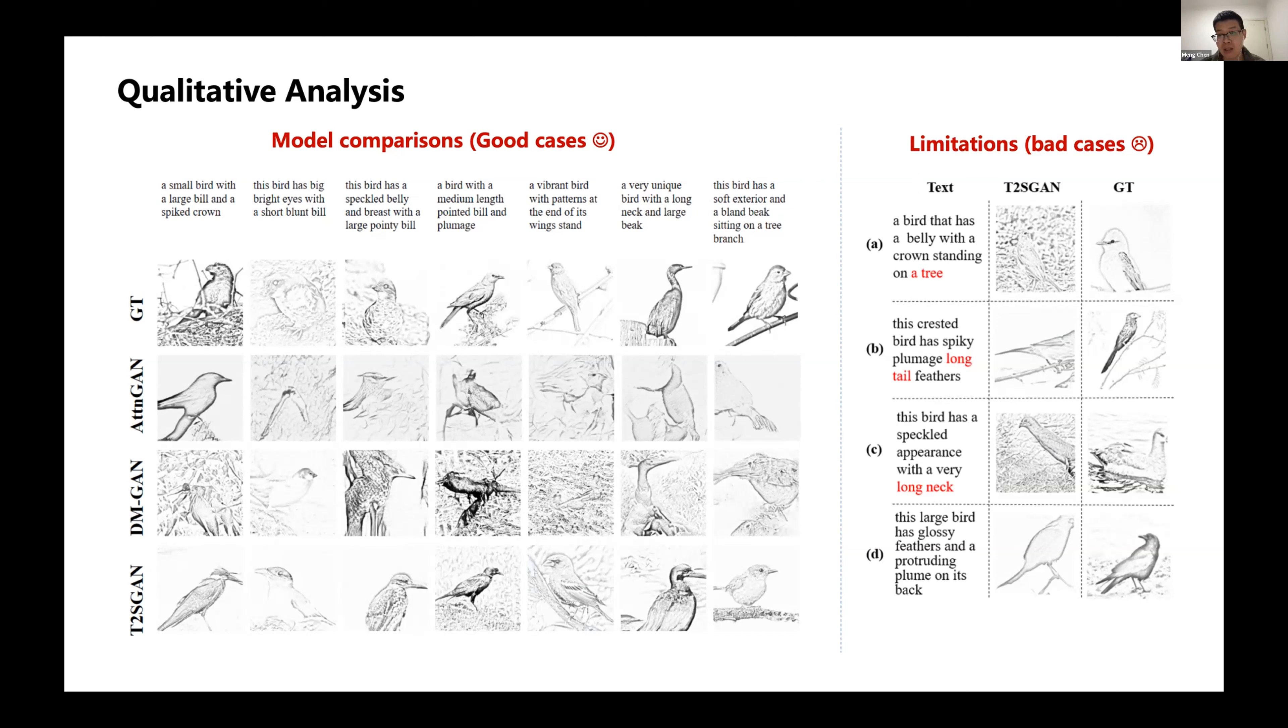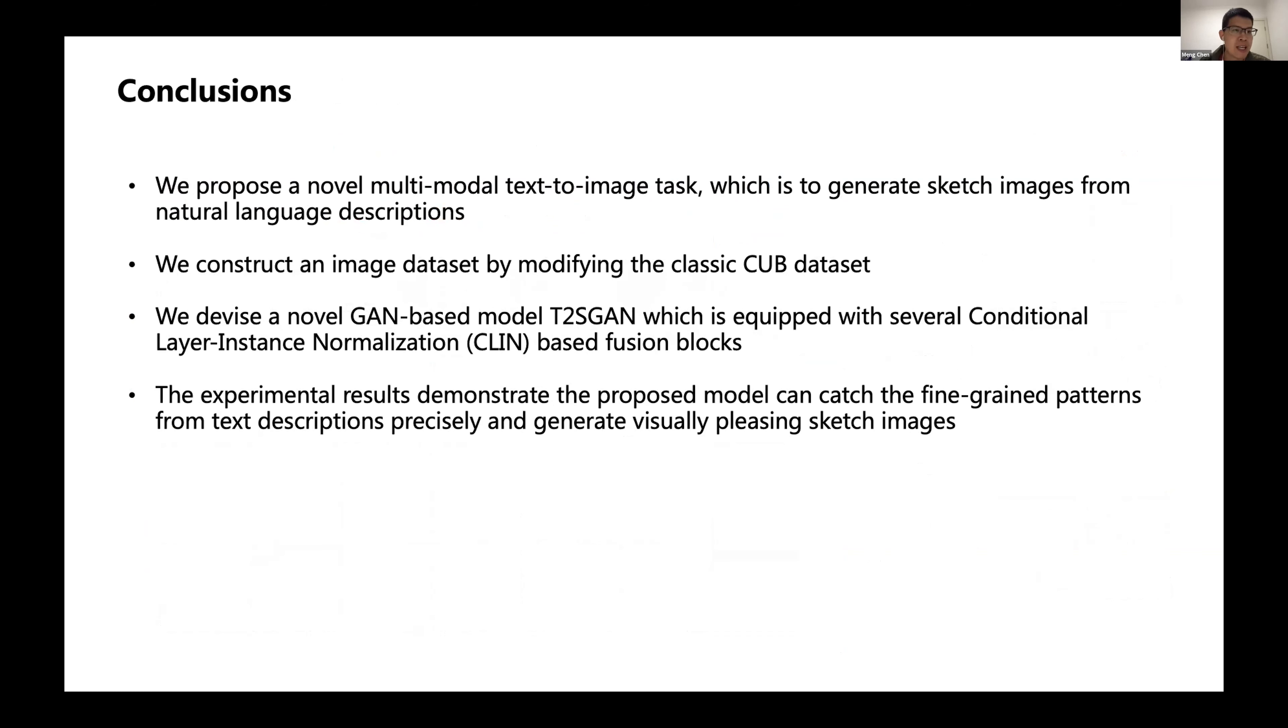Meanwhile, I also want to show the bad cases of our model. The figure on the right demonstrates some limitations. For example, in Figure 5a, the bird stands on a tree as described in the given context. However, in the generated sketch, the body is surrounded with blurring points. This is caused by under-interpretation of the given text context where there are multiple objects that need to be generated. In B and C, the context description includes detailed information like spiky plumage or spectacular appearance. However, the model tends to concentrate on features of long tail or long neck instead of generating the whole bird picture. We will improve these limitations in the future.